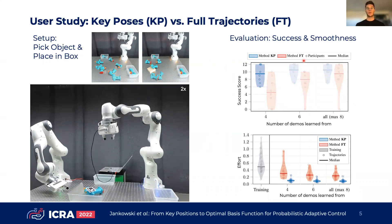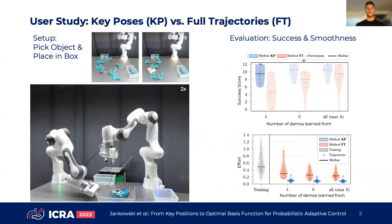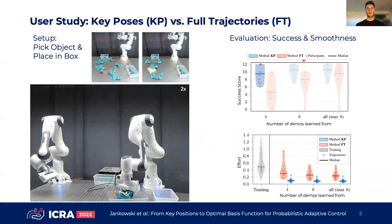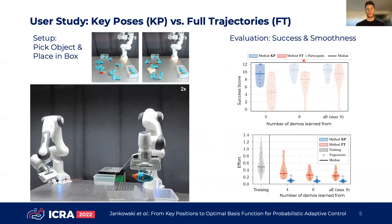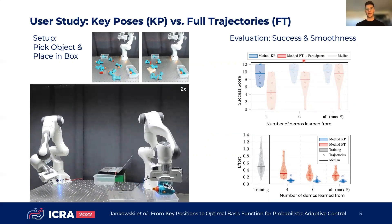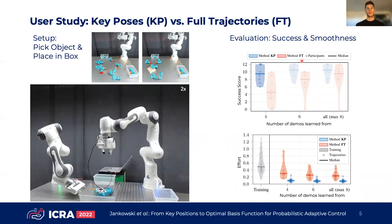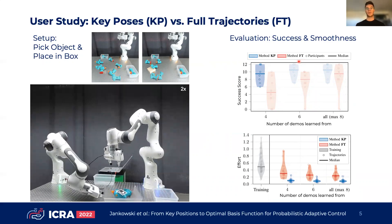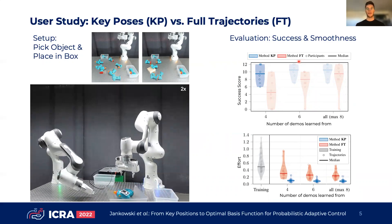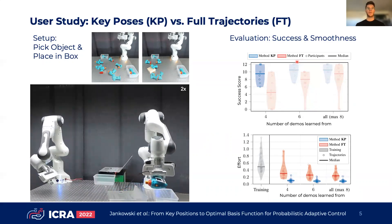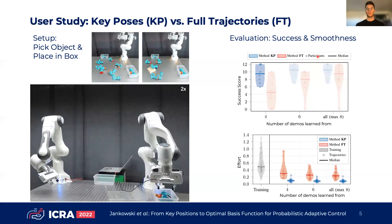We tested two controllers in six unseen test scenarios. One of these is shown in this video, where the position of the object changes while the robot approaches the object. This example demonstrates that our learned controller is able to adapt to such dynamic scenarios. Note that this robot behavior is learned from only four key pose demonstrations given by a first-time robot user.